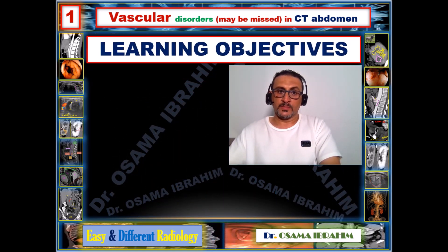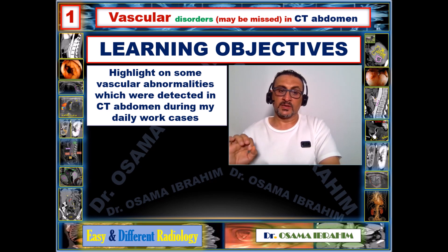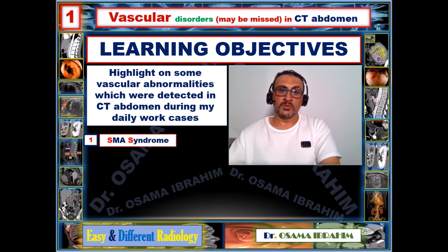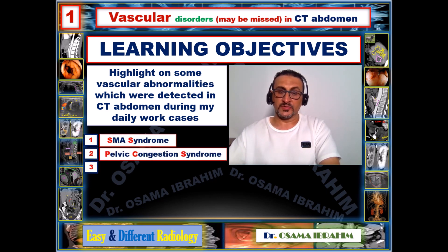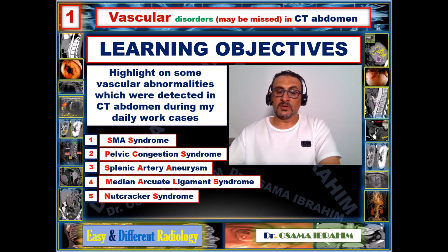The learning objective from today's presentation is to highlight vascular abnormalities during CT examination. I will discuss eight cases: SMA syndrome, pelvic congestion syndrome, splenic arterial aneurysm, median arcuate ligament syndrome, nutcracker syndrome, and splenic arteriovenous malformation. I also have one additional case to discuss, followed by SMA syndrome in two different patients.